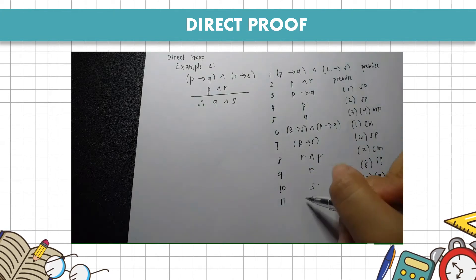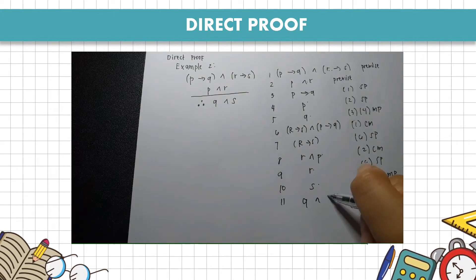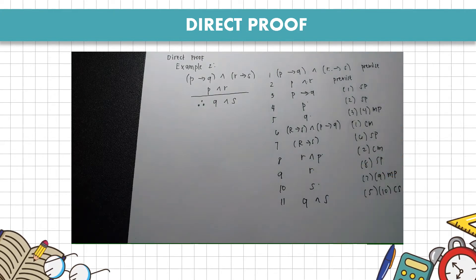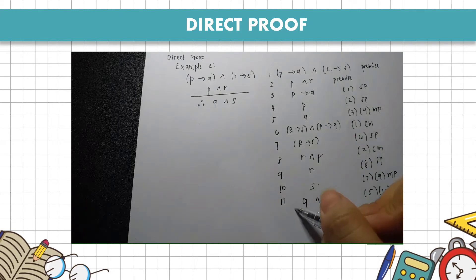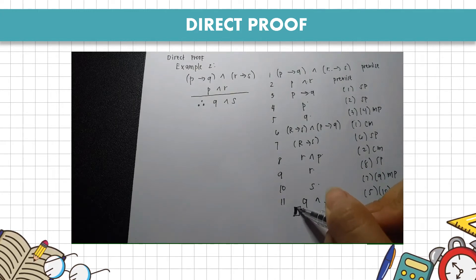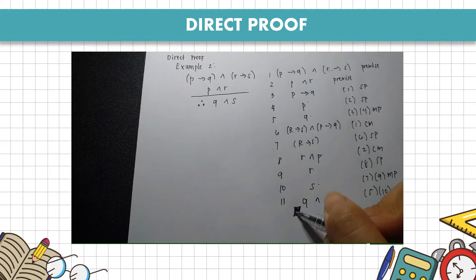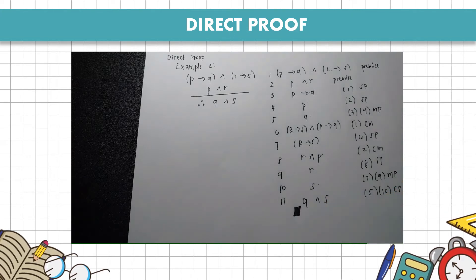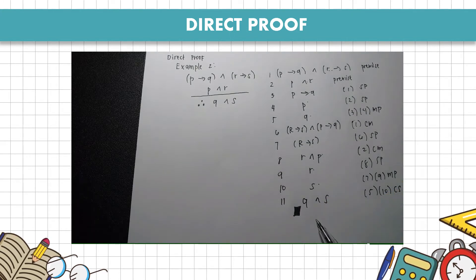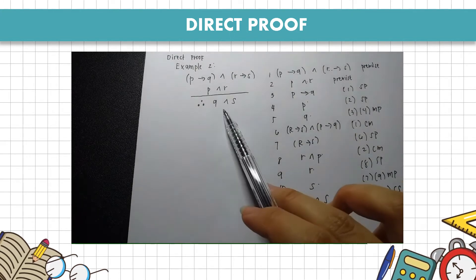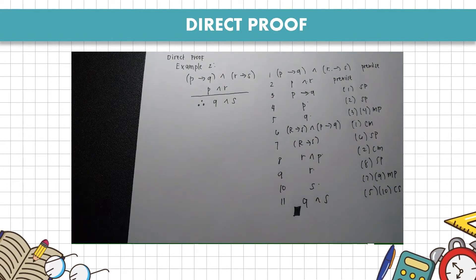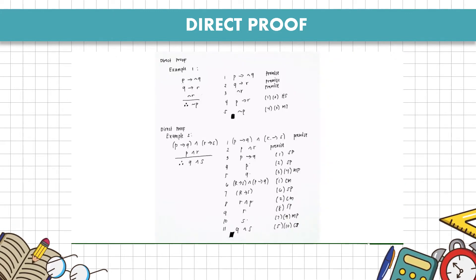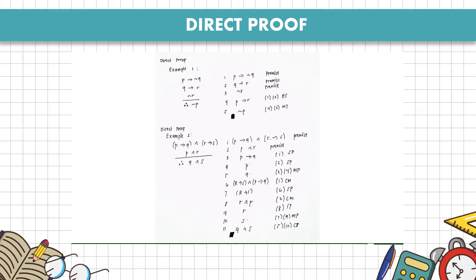Finally, steps 5 and 10 use conjunction (CJO), and the resulting answer is Q and S — which is our conclusion. We place the shaded box because we have proven that the conclusion is true. That concludes the examples for direct proof. I hope this helped you better understand how direct proof works.